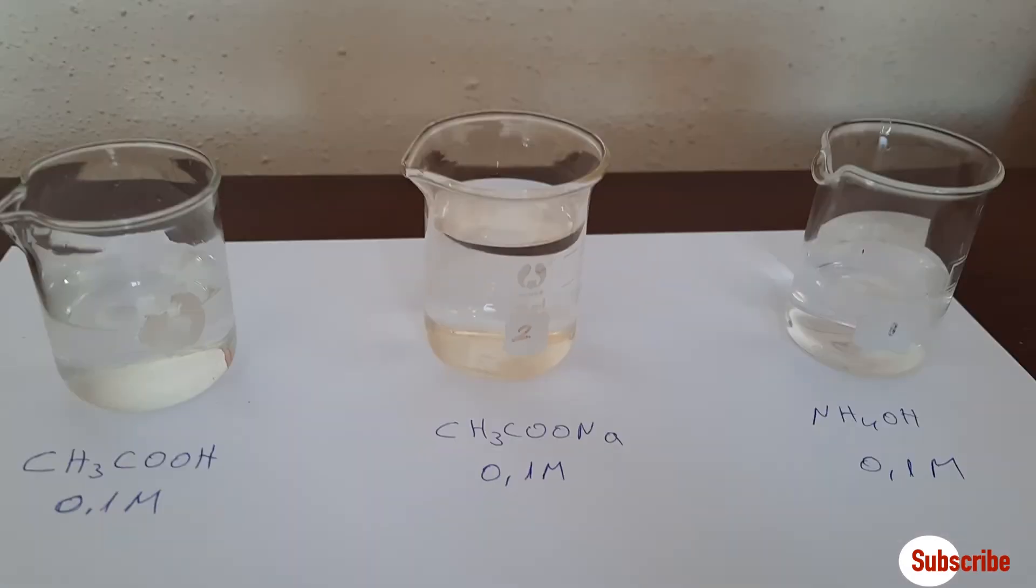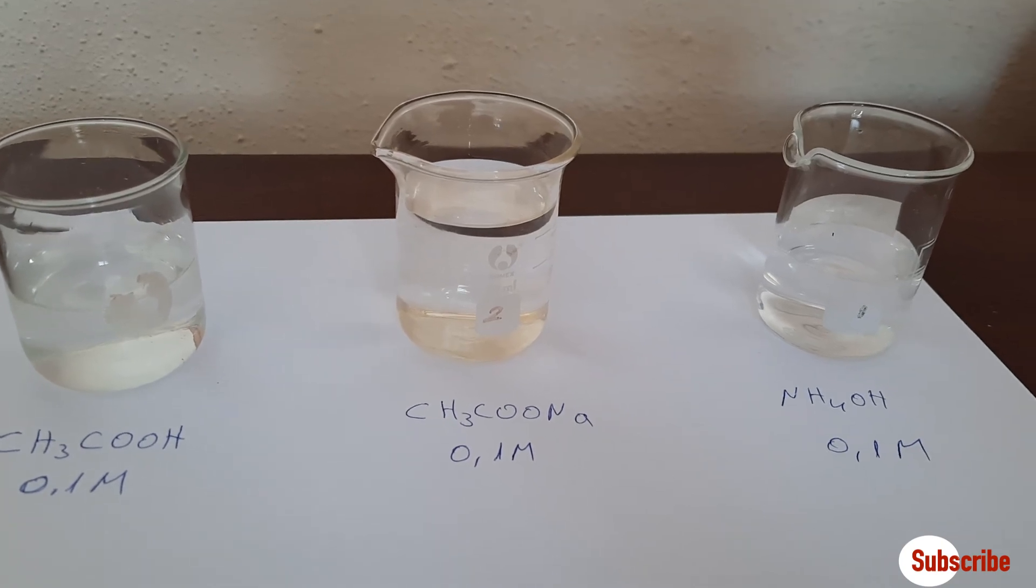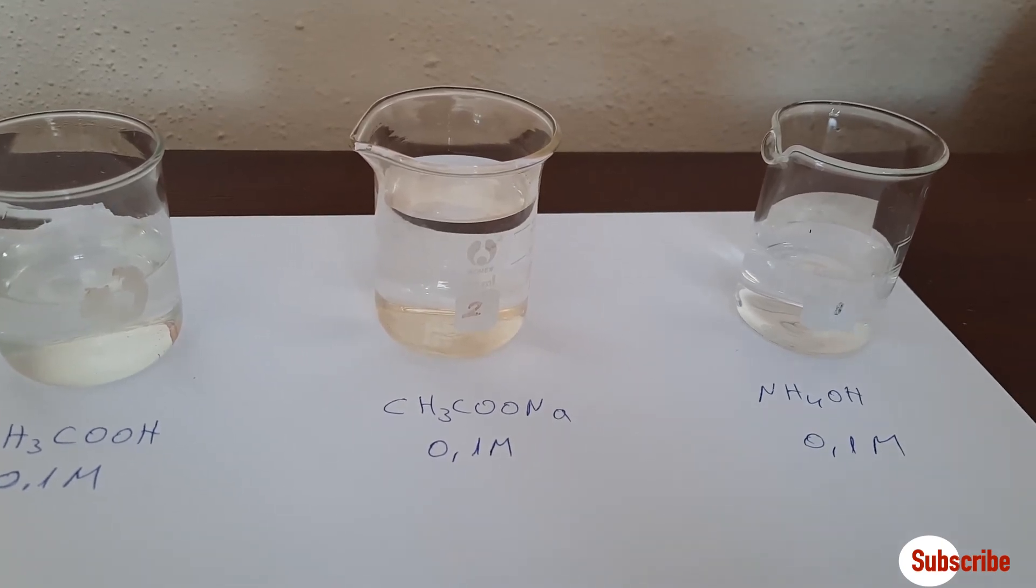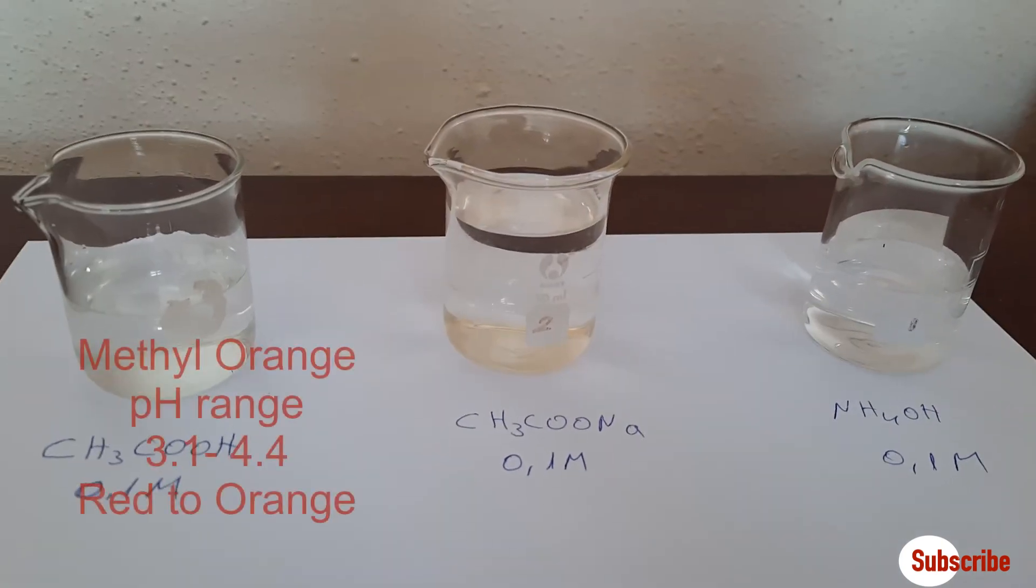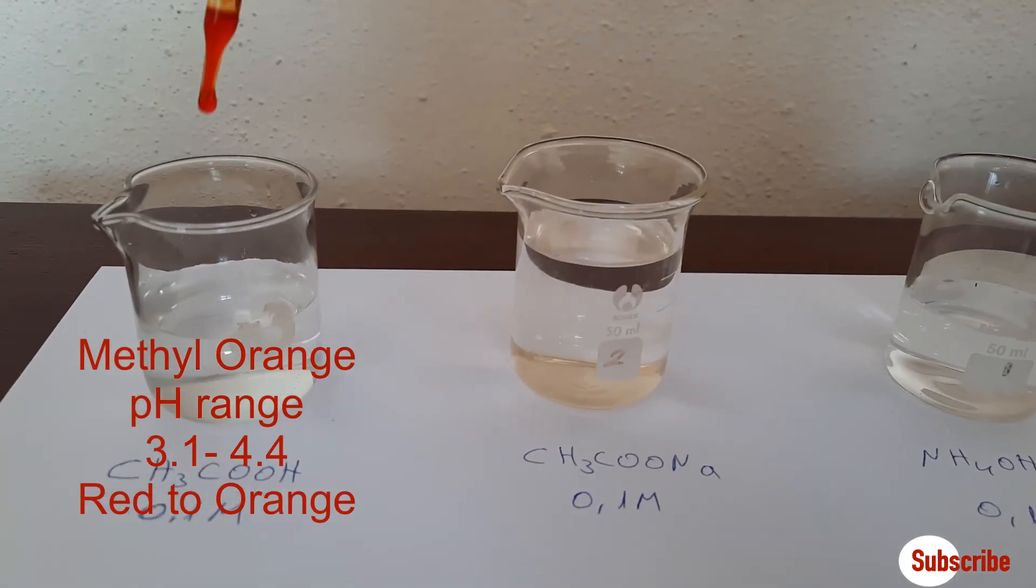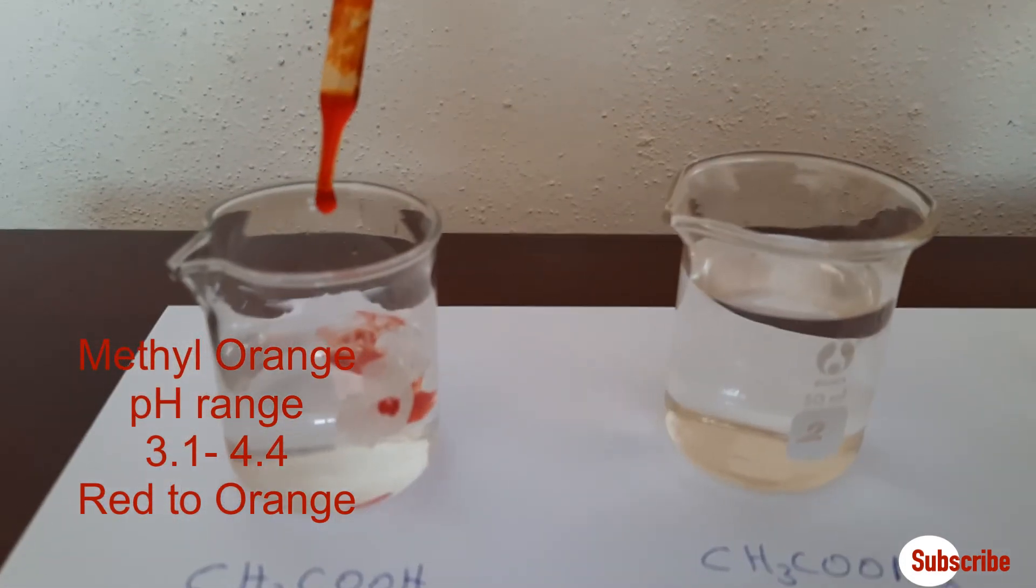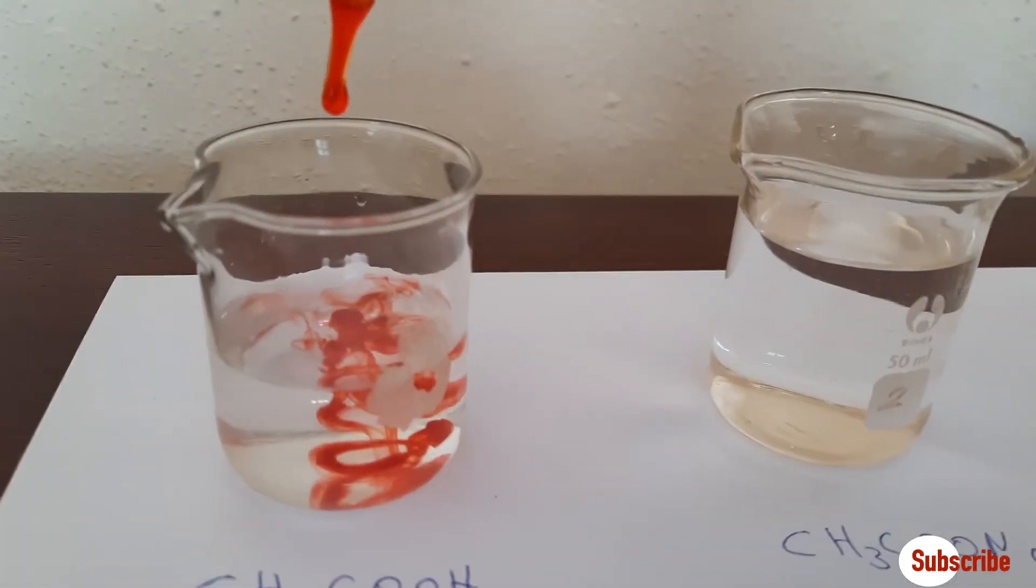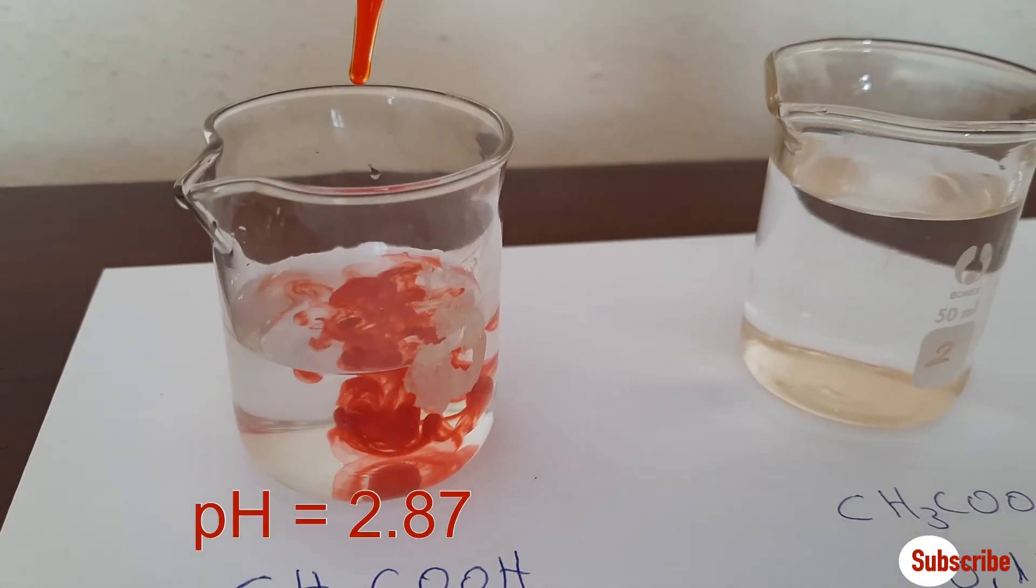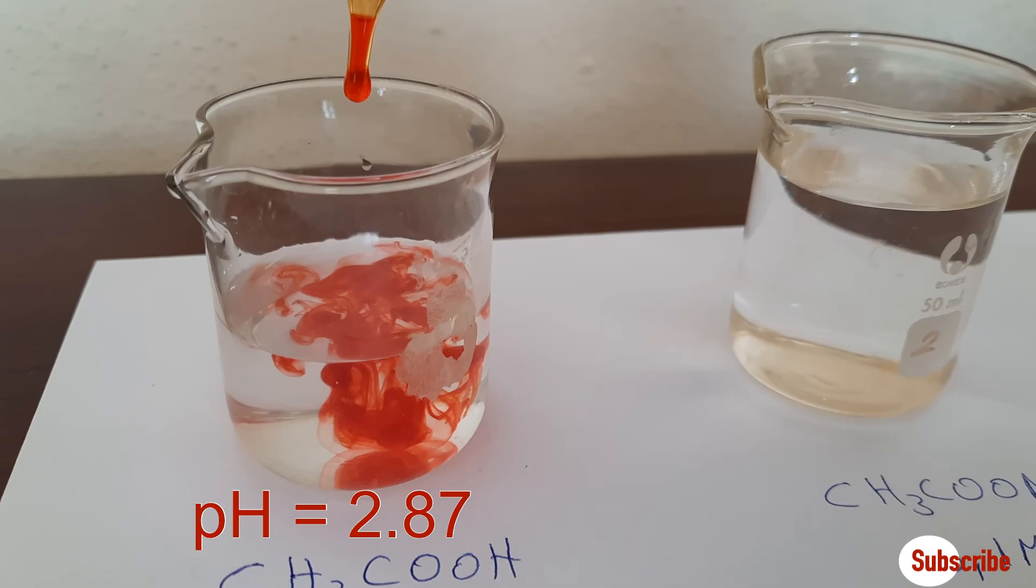Here we have the acid 0.1 molar, the salt again 0.1 molar, and the base, ammonium hydroxide. Let's start with methyl orange with acetic acid. We see the red color that indicates the presence of the acid.